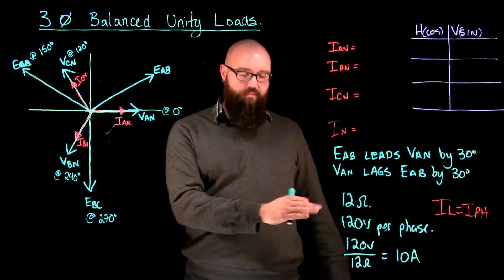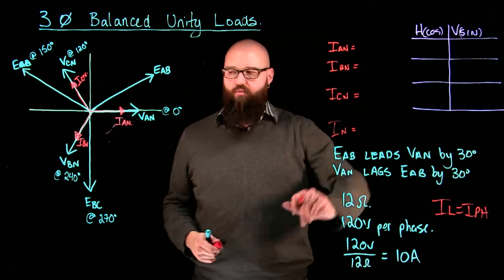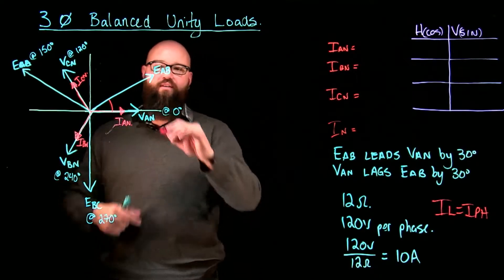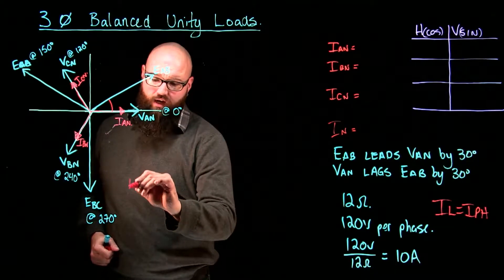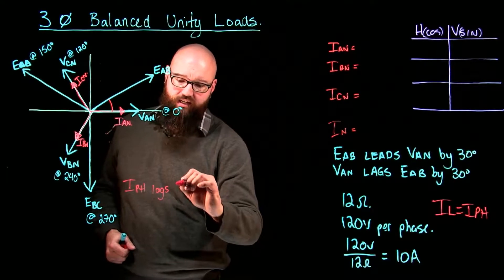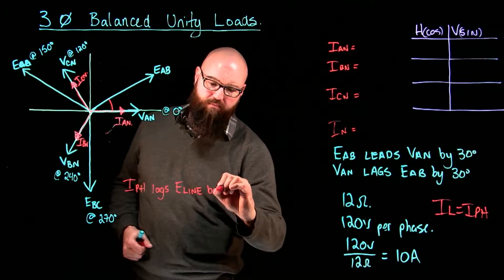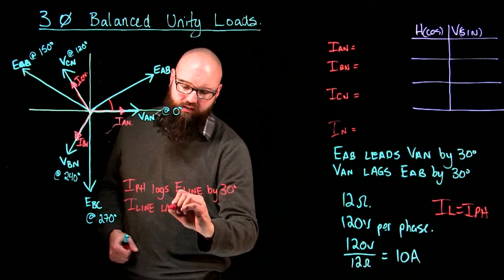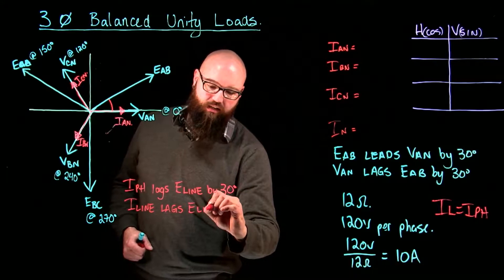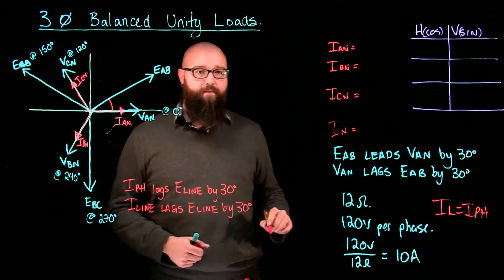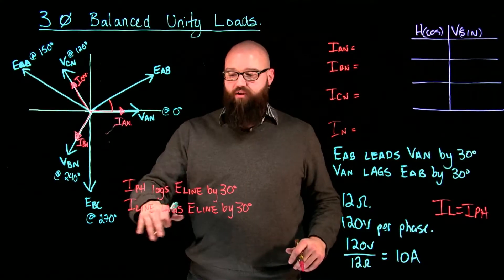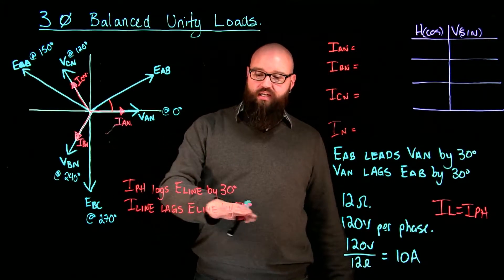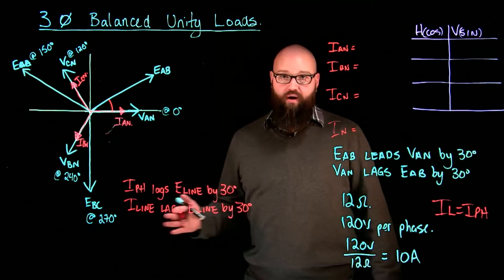With those statements in mind, we can start to build some more. I can say that if I look at where I A to N is, I can see that I A to N is lagging line voltage by 30 degrees. So I phase lags E line by 30 degrees, which is also the same as saying I line lags E line by 30 degrees. Because it's unity, I know that my current is in phase with my phase voltage. If we were to throw in some power factors here — if it was an inductive load, we would start to see it lag by 30 degrees plus whatever that power factor angle is. We'll look at that in a later video.